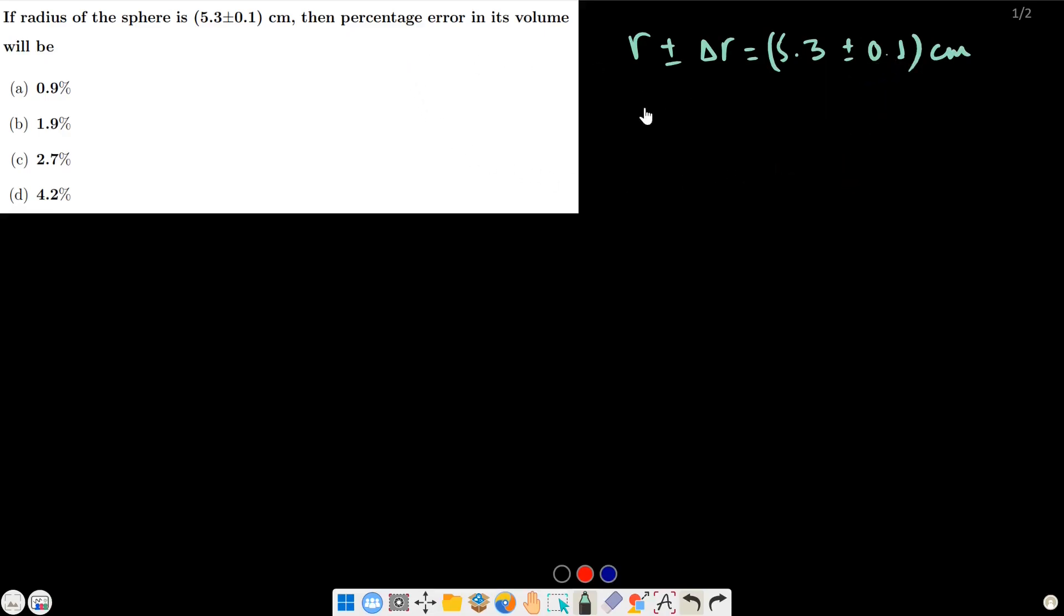Percentage error in volume: del V by V into 100. Since del V is nearly equal to dV and del r is dr, we need to calculate dV by V into 100 percentage.